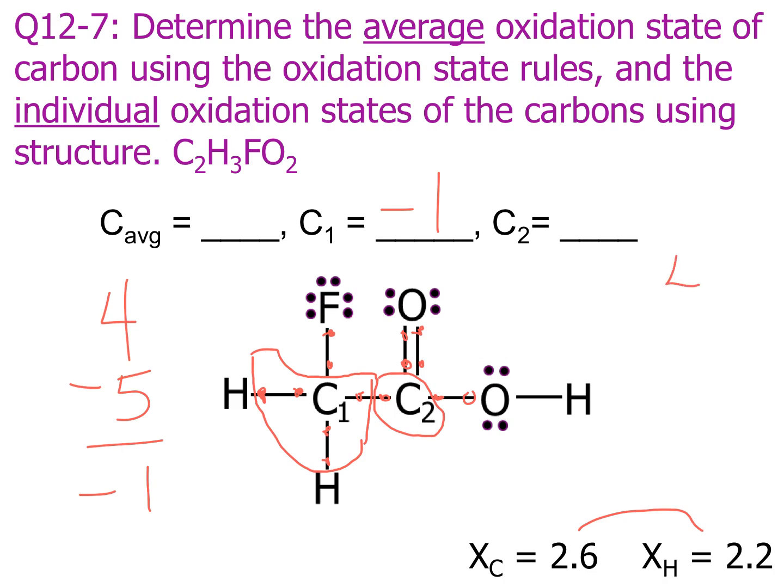So again, it's group number 4. There is one electron in the circle, so the oxidation state is plus 3. Alright, we have those two pieces of information now. Let's go on to the next one.